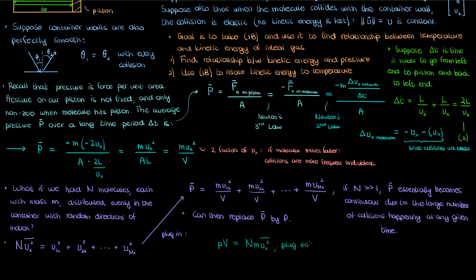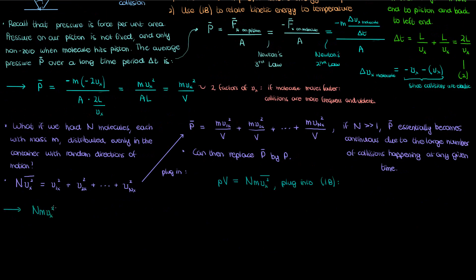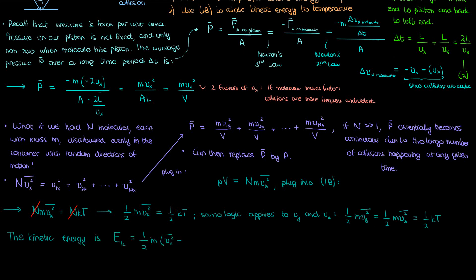If you then plug this into the ideal gas law, the capital N's cancel out and you get m times v sub x squared bar equal to k times T. Half of this would then be half of k times T. The same logic applies to the v sub y and v sub z velocity components, and if we use the fact that the kinetic energy is half m times the sum of squares of these velocity components we can add the half kT contributions from each of these components to conclude that the kinetic energy of our ideal gas molecule is 3 over 2 times k times capital T. I'll call this equation 3.